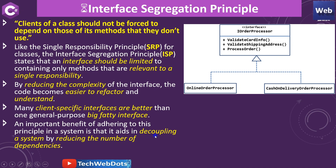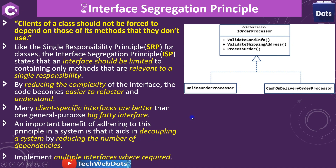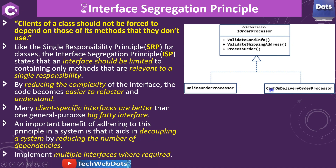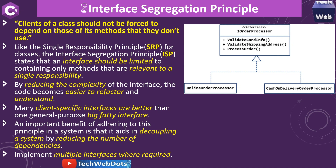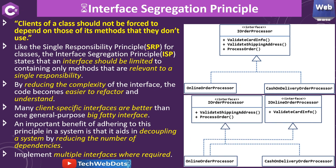An important benefit of adhering to this principle is that it aids in decoupling a system by reducing the number of dependencies. If the CashOnDeliveryOrderProcessor is not dependent upon ValidateCardInfo, we should create another interface that fulfills its needs.